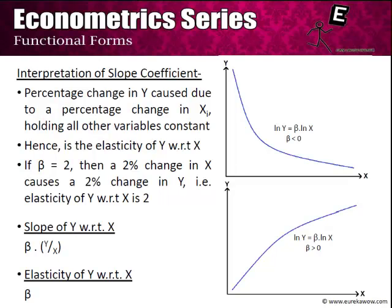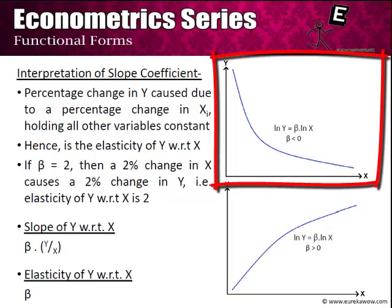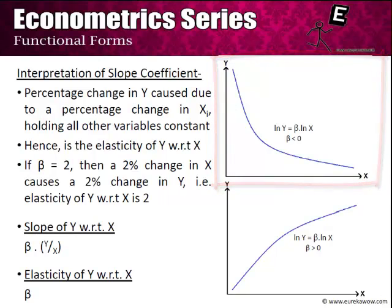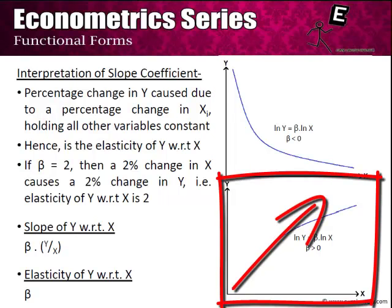The interpretation of the slope coefficient is the percentage change in y caused by a percentage change in x, holding all other variables constant, and this elasticity is constant. To put numbers to it: if β = 2, then a 2% change in x causes a 2% change in y. Graphically, if β < 0 we get a downward-sloping curve, and if β > 0 we get an upward-sloping curve that eventually flattens out.